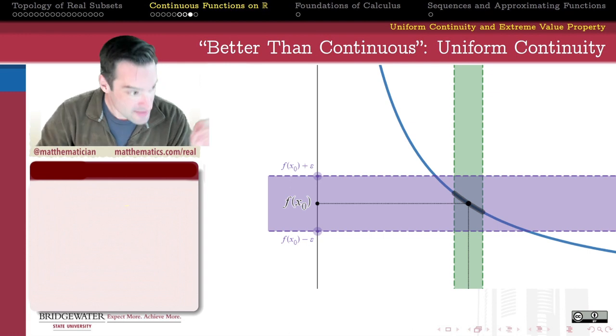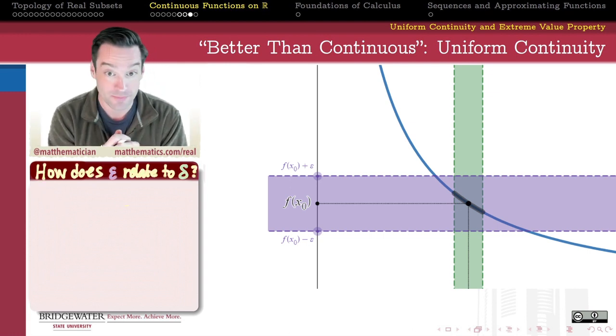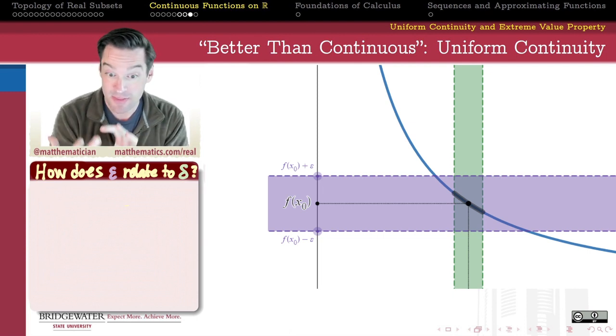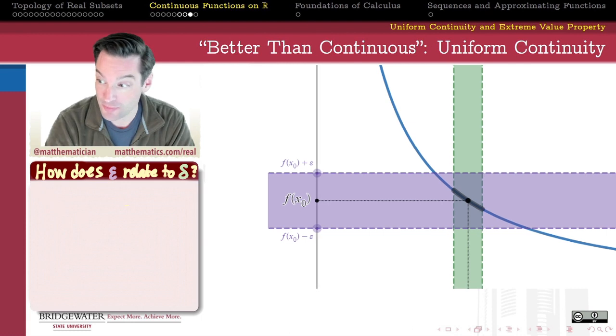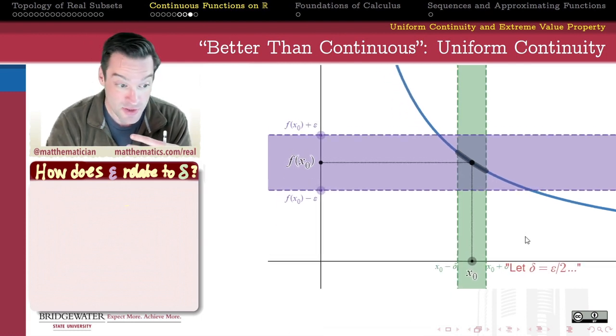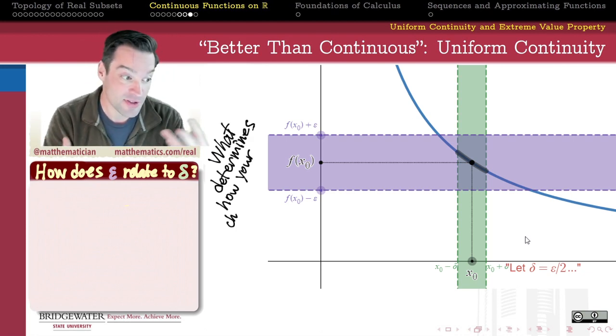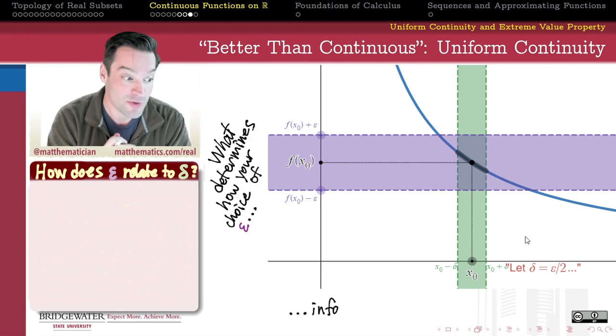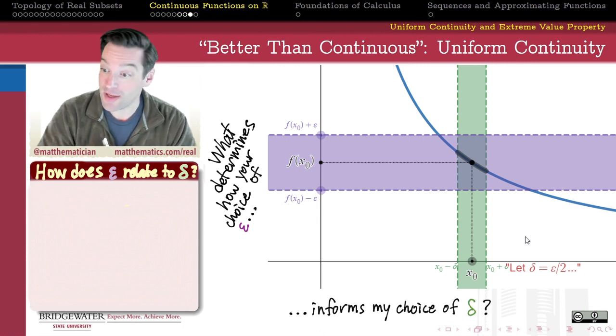So I might ask the question, how is the value of epsilon related to the value of delta that defines this function as a continuous function on this particular domain? So we can show that this function is continuous just by writing out a proof whereby the universe selects an arbitrary choice of epsilon and that arbitrary choice of epsilon should inform my choice of delta.